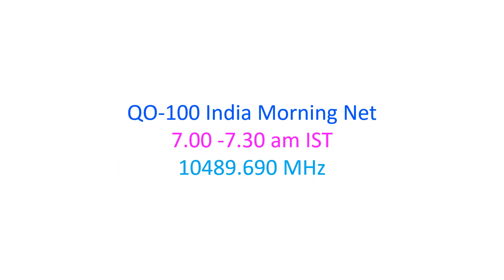I usually monitor the 10489.690MHz waterfall, which appears when the QO100 India Morning Net starts at 7AM IST. When there is a short transmission, the waterfall starts at the bottom of the picture and moves up as the transmission stops. The next waterfall starts from the bottom with the next burst of transmission.